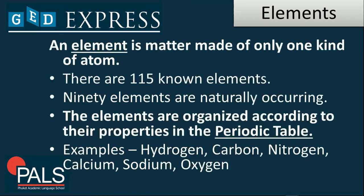An element is a matter made of only one kind of atom. There are almost 150 known elements, and 90 of these are naturally occurring. The elements are organized according to their properties on the periodic table. Examples would be hydrogen, carbon, nitrogen, calcium, sodium, and oxygen.